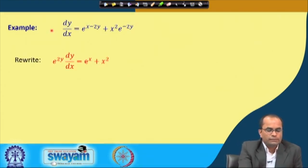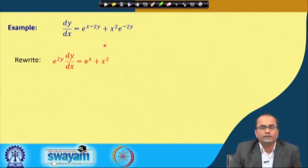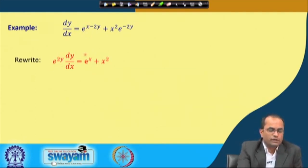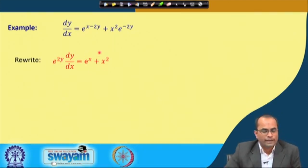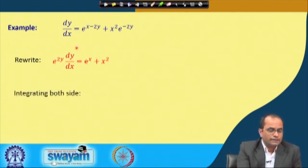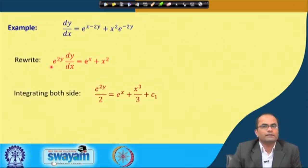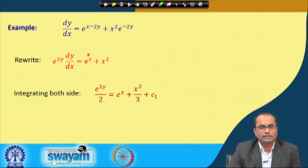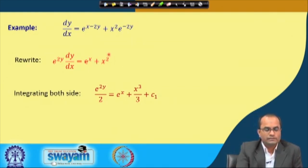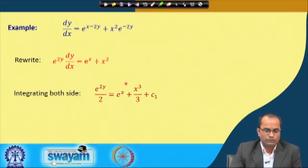We multiply both sides by e^(2y), so the right hand side becomes e^x + x², which is free from y. We have everything on the left as a function of y and the right hand side as a function of x. Integrating both sides: ∫e^(2y)dy = ∫(e^x + x²)dx, which gives e^(2y)/2 = e^x + x³/3 + c₁.